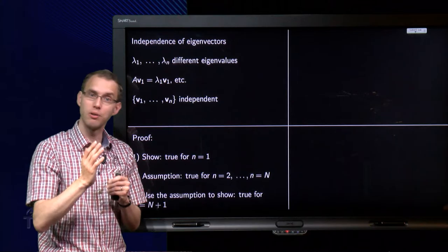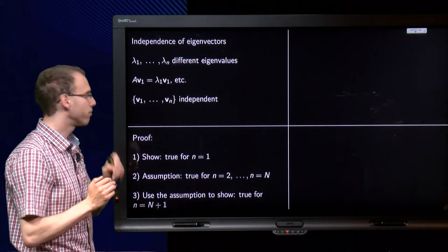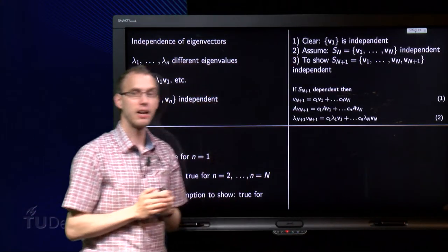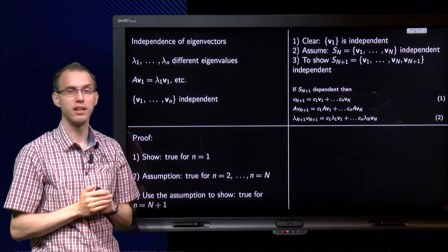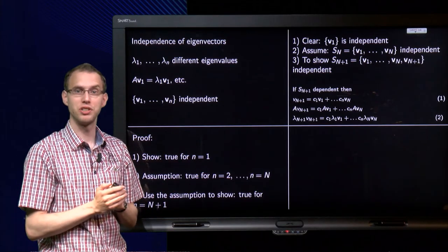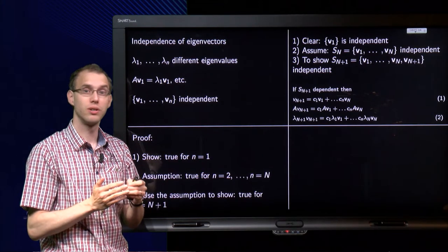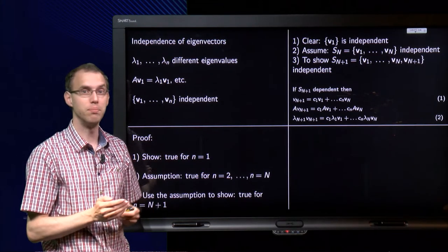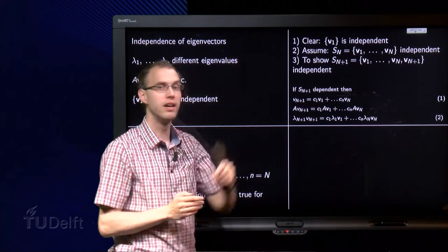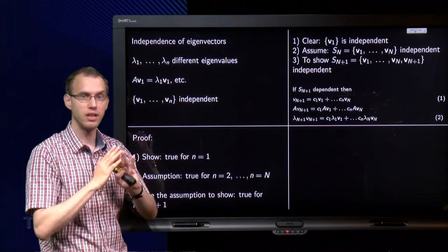How are we going to do it in this case? First, we prove it is true for N equals 1. If I have a set consisting of only one vector, the set is obviously independent — we have eigenvectors, so it cannot be the zero vector. So that is fine.